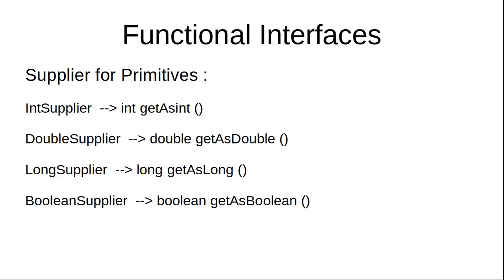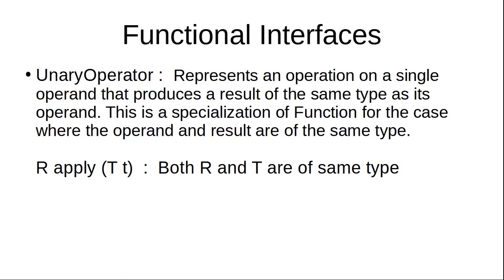Supplier has four primitive flavors. Since Supplier has no input, the flavor is determined by the return type. If you expect a result of type integer, prefer IntSupplier — its abstract method is getAsInt(). For double, use DoubleSupplier with getAsDouble(). For long, use LongSupplier with getAsLong(). Additionally, there is BooleanSupplier with getAsBoolean() for boolean return types.